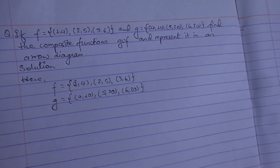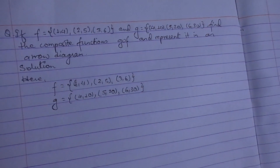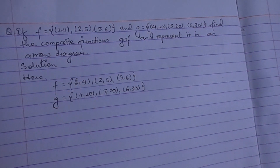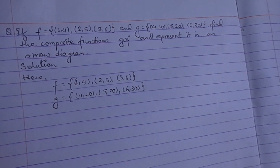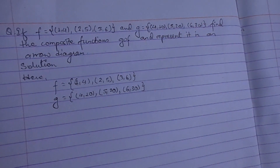According to the equation we need to find the composite function gof and represent it in an arrow diagram. You can first represent it in an arrow diagram, or you can first find gof and then show that in an arrow diagram.